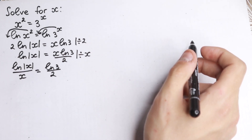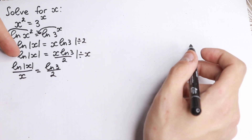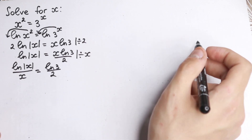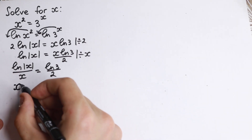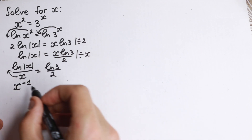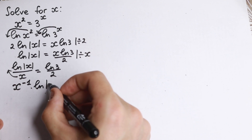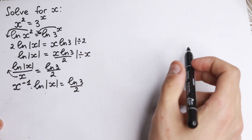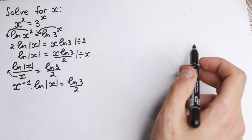This is a constant on the right side, but having x both inside the logarithm and in the denominator makes it very difficult. Let's simplify by bringing the x in the denominator up as x to the power minus 1. So we have x to the power minus 1 times natural log of absolute value of x equal to natural log 3 over 2. This is the maximum simplification we can do algebraically.